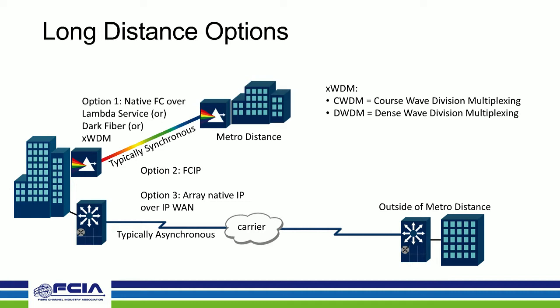There are several different options for long-distance connectivity between storage to provide BCDR capabilities. The first option is to connect your storage using native Fiber Channel. This is popular with customers who have two sites not far apart — less than 100 kilometers. Customers can connect two campuses using long-wave SFPs, and in some cases also use DWDM or CWDM multiplexing if they're sharing a lambda.